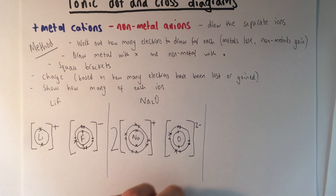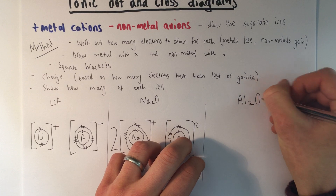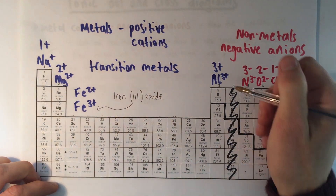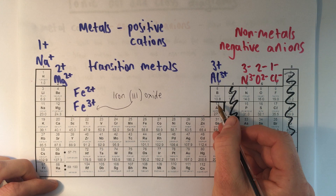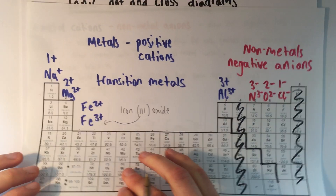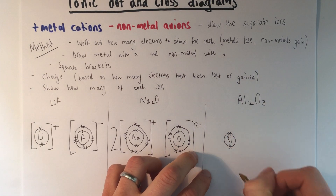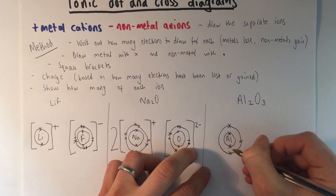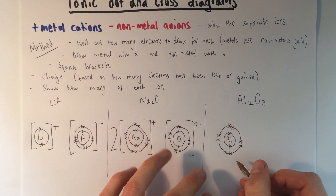The last example is aluminium oxide. We could work out the formula by balancing the ions, but the formula is Al₂O₃. Aluminium is in group three, so it's going to lose three electrons to get its full outer shell — it originally had 13, so it's going to have 10. The oxide ion we've just done: it gains two electrons to also have 10 electrons. For aluminium, I draw the first two electrons, then the next eight go in the next shell — that is its full outer shell. I'm not going to show the last three because it's lost those three.